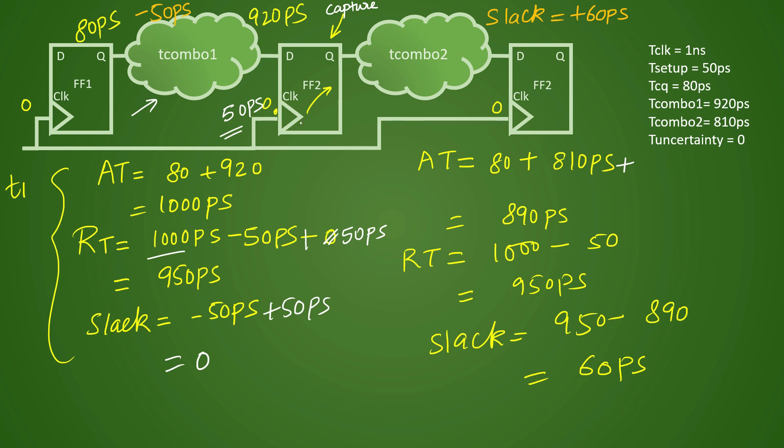So arrival time will increase now by 50 picoseconds. If your arrival time is increasing, it will come up to 940 picoseconds. And in this case, what will happen is you will not have this value, this value will change. Now required time will remain same, slack will change to 950 minus 940 instead of 890. And then slack will come to 10 picoseconds.